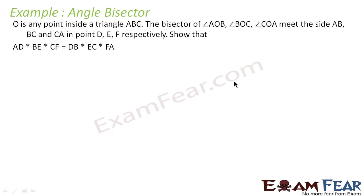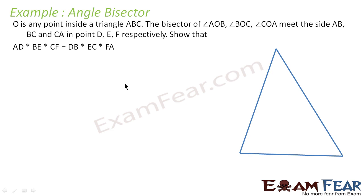Let's take one more example. O is any point inside triangle ABC. The bisectors of angles AOB, BOC, and COA meet sides AB, BC, and CA at points D, E, and F respectively. We have to prove that AD times BE times CF equals DB times EC times FA.